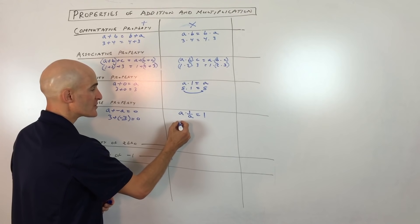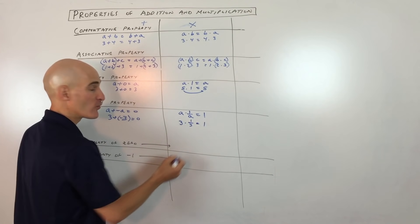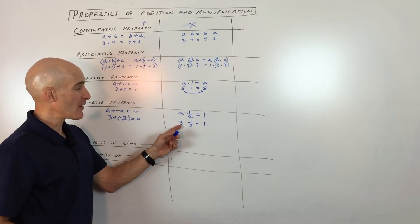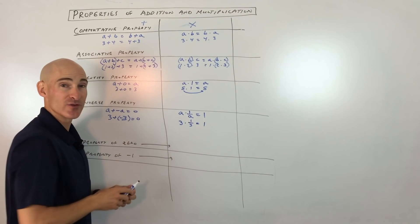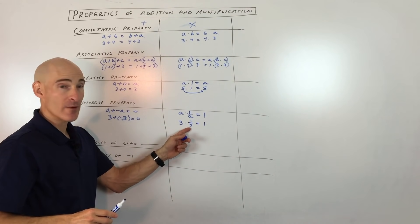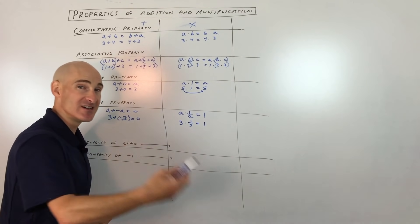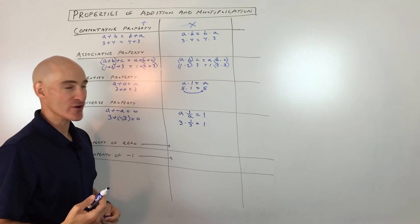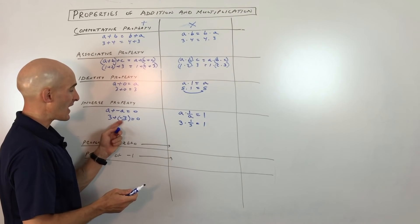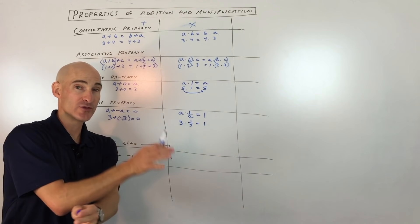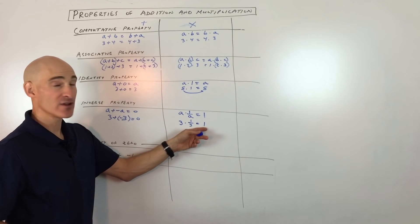The inverse property of multiplication is a little different: A times 1 over A equals 1. An example would be 3 times one-third equals 1. It's like if you multiply by 3, the inverse is to divide by 3 — and dividing is like multiplying by the reciprocal. So if you do 1 over that number and multiply, you get back 1. With multiplication, getting back 1 is like undoing — the inverse. Inverse property of addition gives you 0; inverse property of multiplication gives you 1.